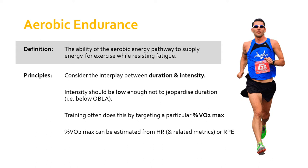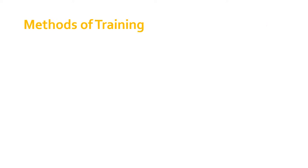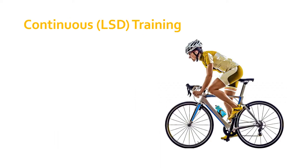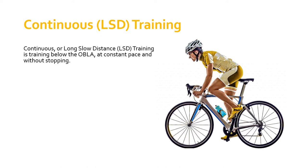What are the methods available for aerobic endurance training? There are three key methods: first, continuous or LSD training; second, long interval training; and third, fartlek training. We'll look at continuous LSD training first, then long interval training, and then fartlek training.